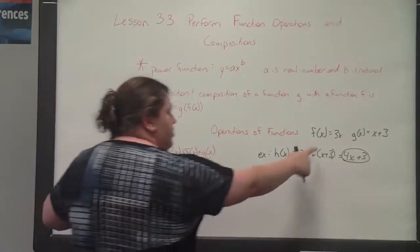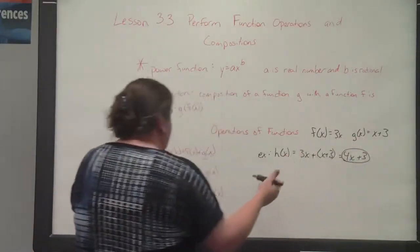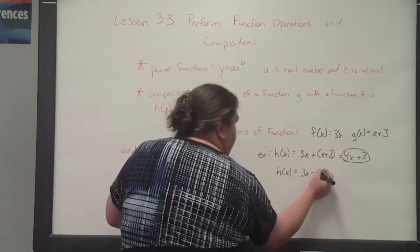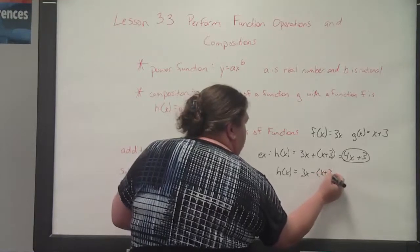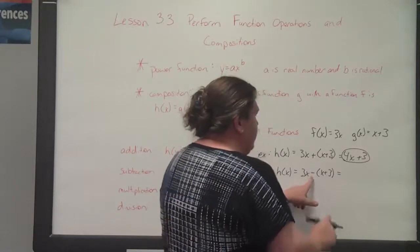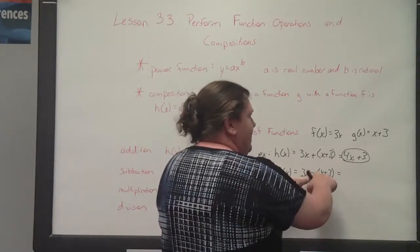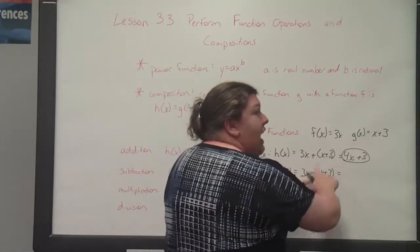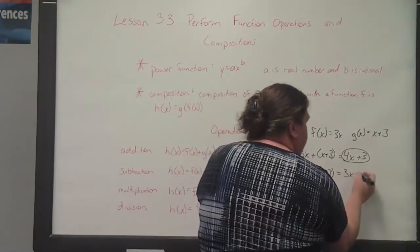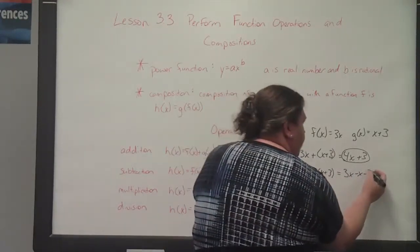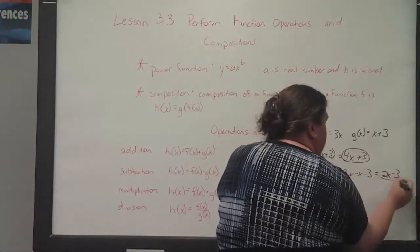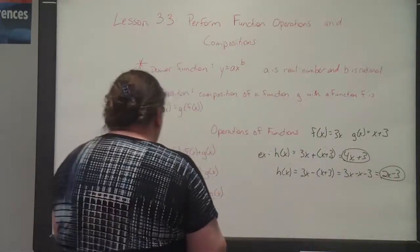For subtraction, h of x equals 3x minus x plus 3. Because of the subtraction, we have to distribute it to everything inside the parentheses. So we rewrite this as 3x minus x minus 3. Then 3x minus x gives us 2x minus 3.